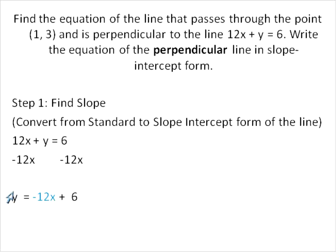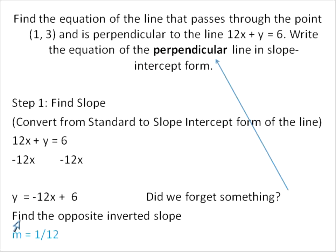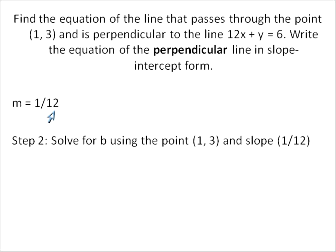We subtract 2x from both sides of this equation. Because there is no coefficient of y, we're done: y = -12x + 6. The slope of this line is -12. But we have to remember we are looking for the line that is perpendicular — perpendicular lines have the opposite inverted slope, or the opposite reciprocal. So -12 over 1 becomes positive 1 over 12. Our slope is 1/12.